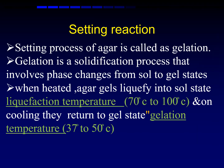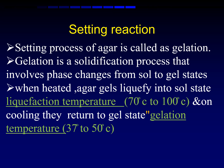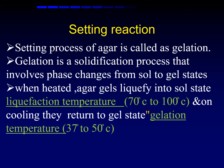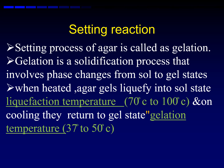Agar is a thermoplastic impression material. The setting process is called gelation. Gelation starts when the material liquefies at the temperature of 70 to 100 degree centigrade. It becomes gel, and gelation starts at mouth temperature, that is 37 degree centigrade. Totally it becomes gel at 30 to 21 degree centigrade.